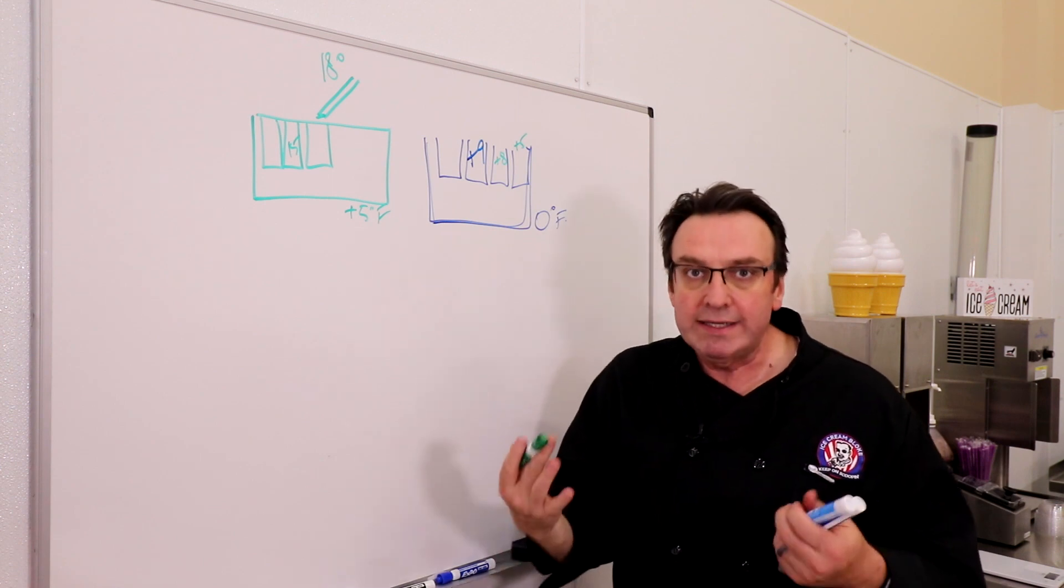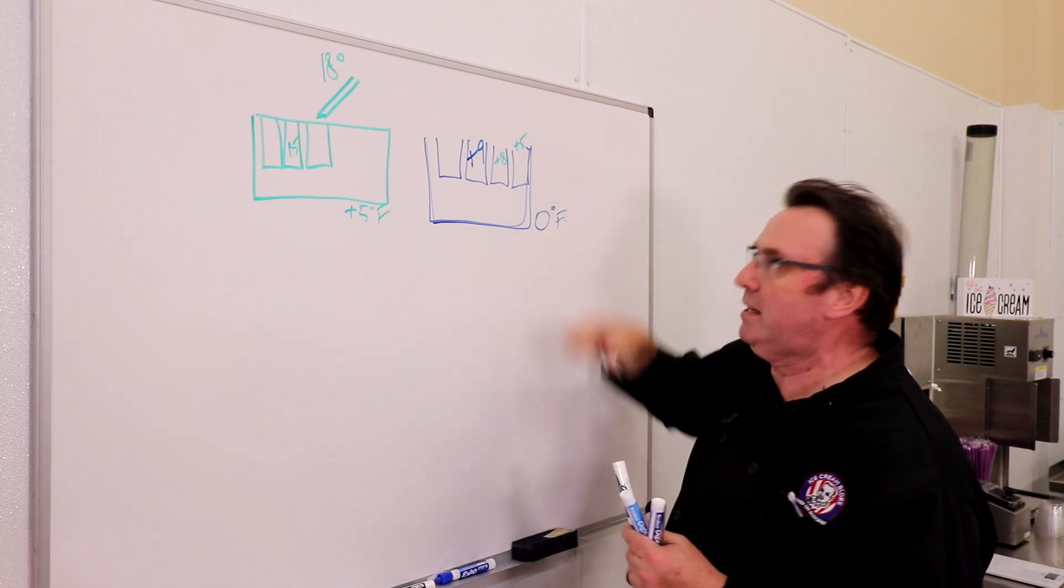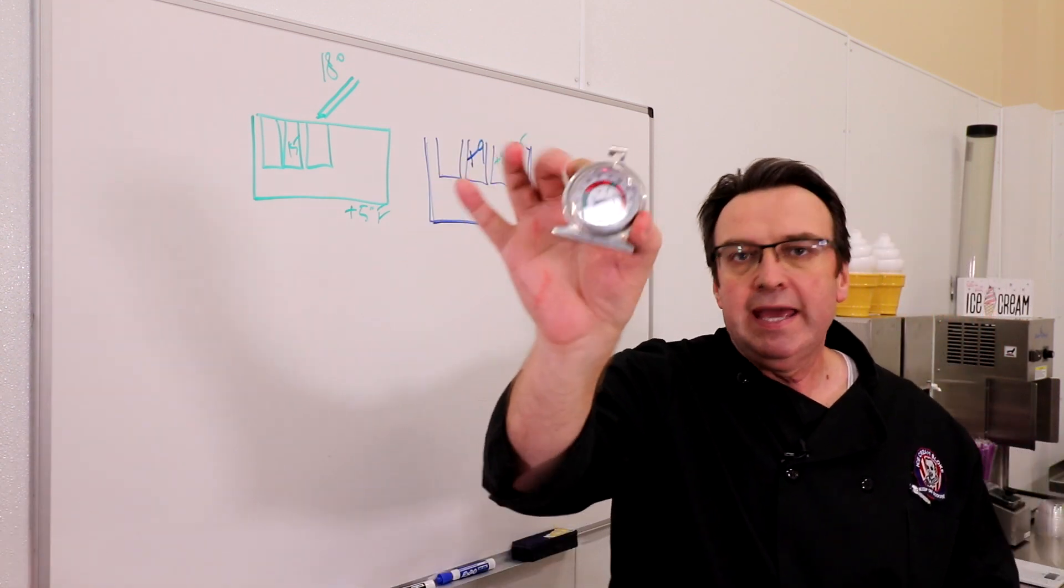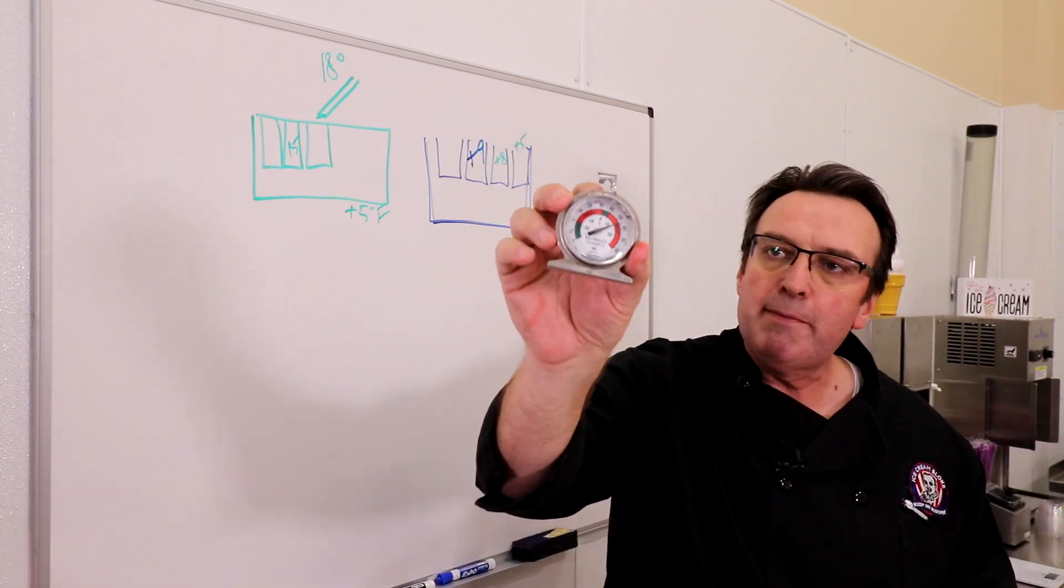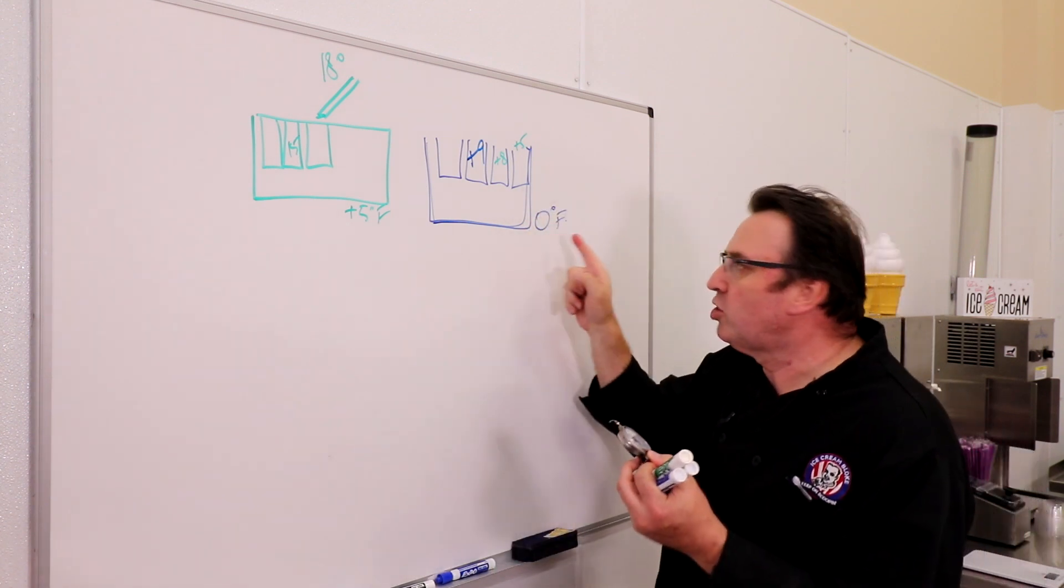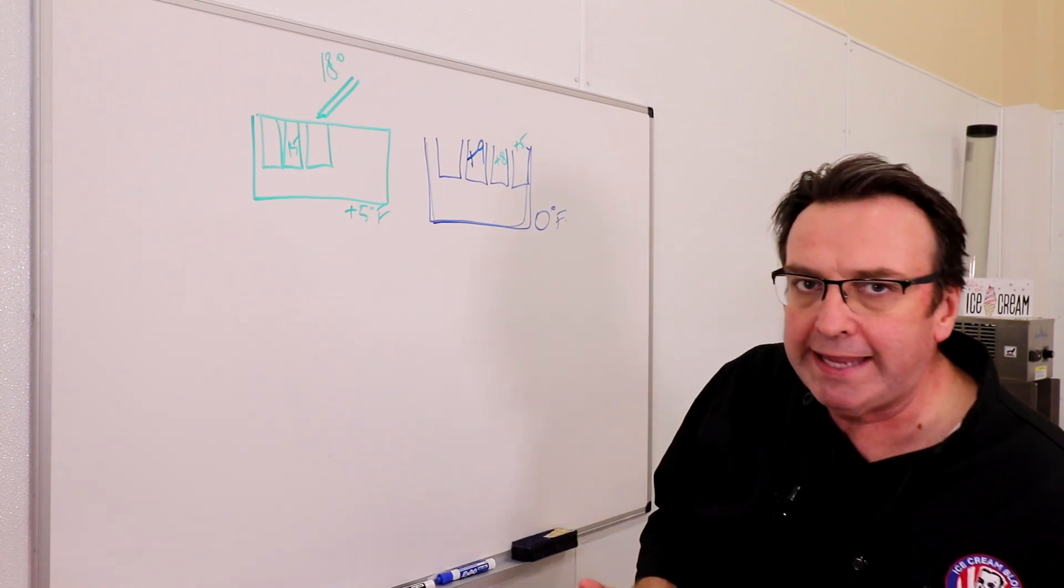So you've got all of these differentiators when it comes to monitoring temperature. You've got your cabinet temperature, you've got your product temperature, and that's why this little guy here is important. This is a temperature gauge that basically backs up what your thermostat says on your dipping cabinet.